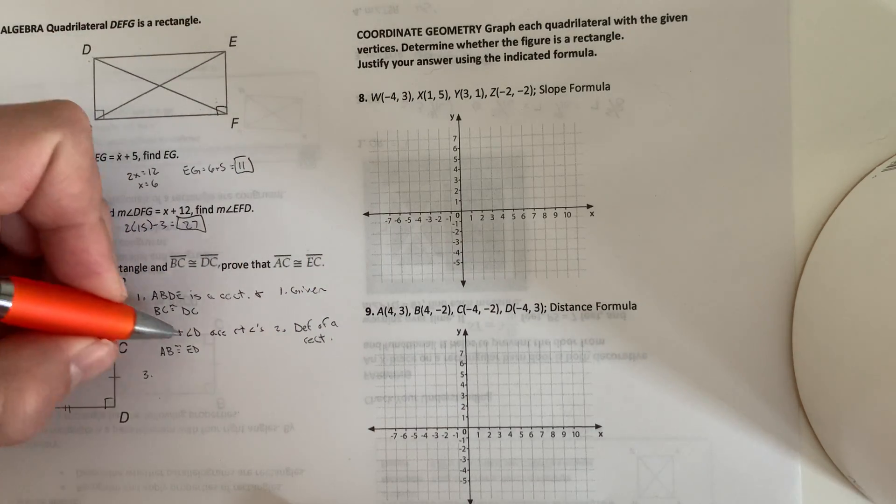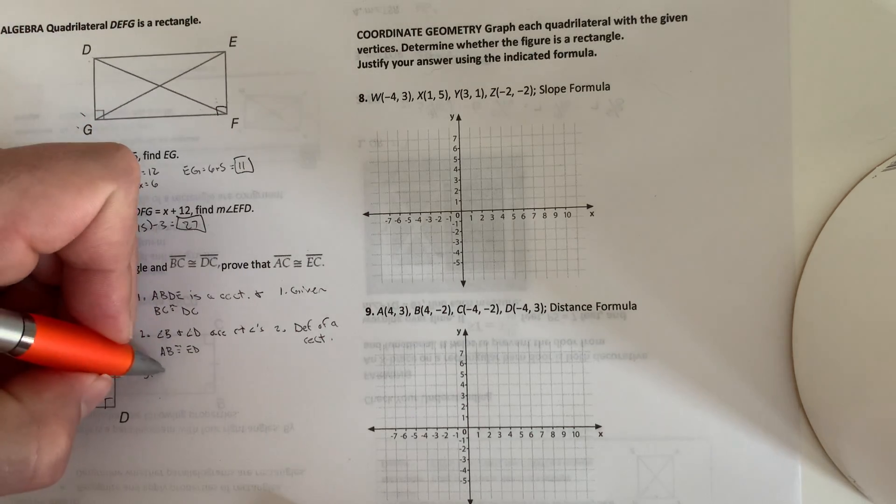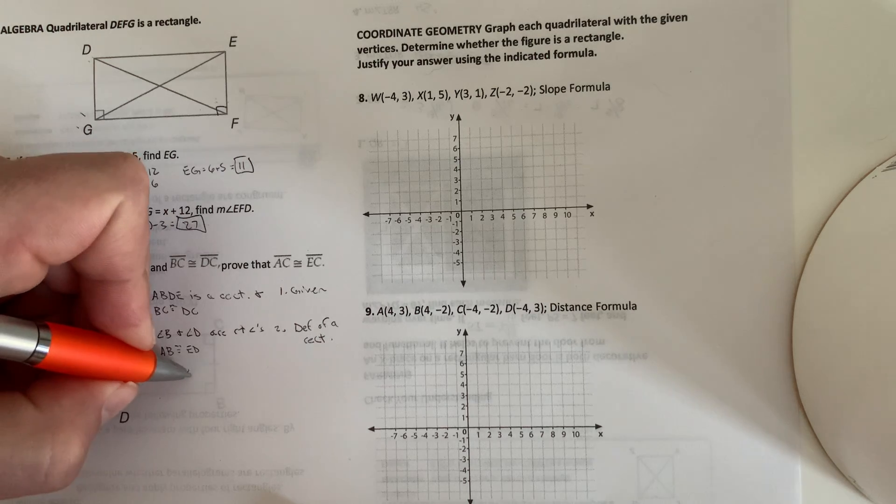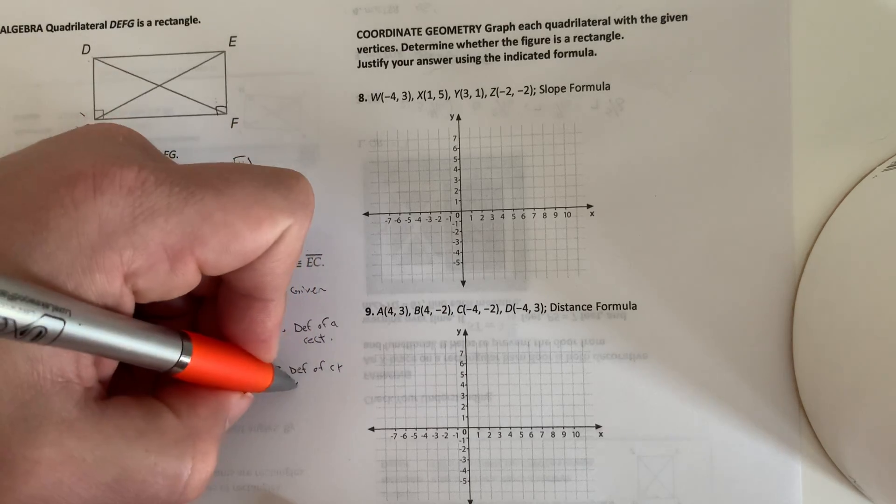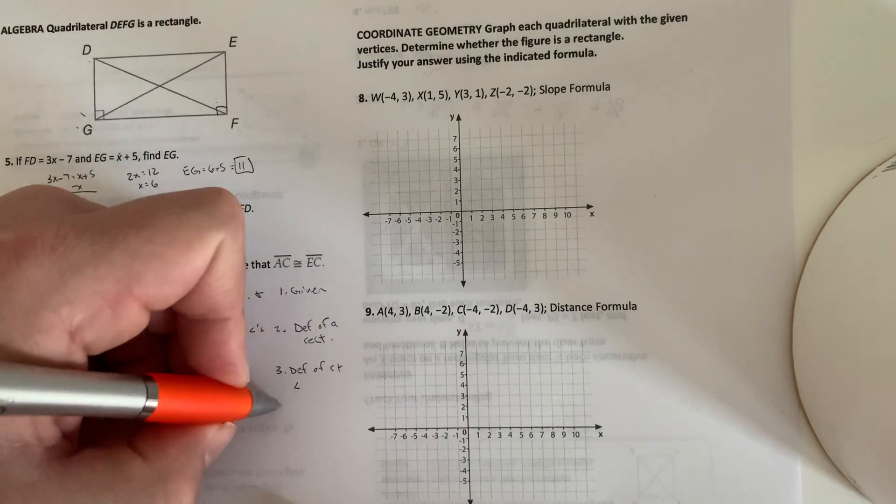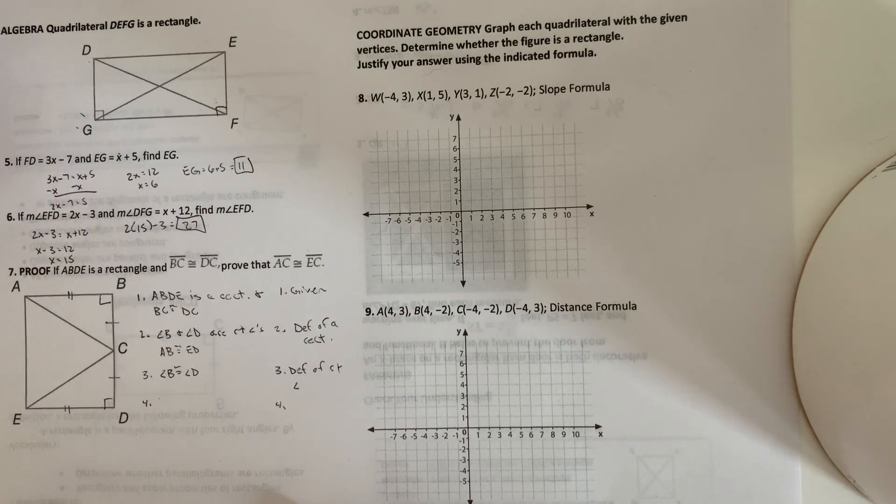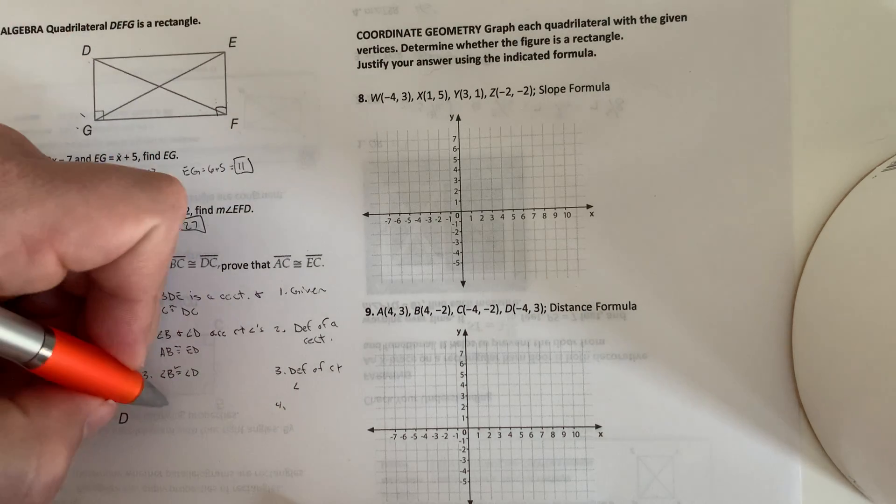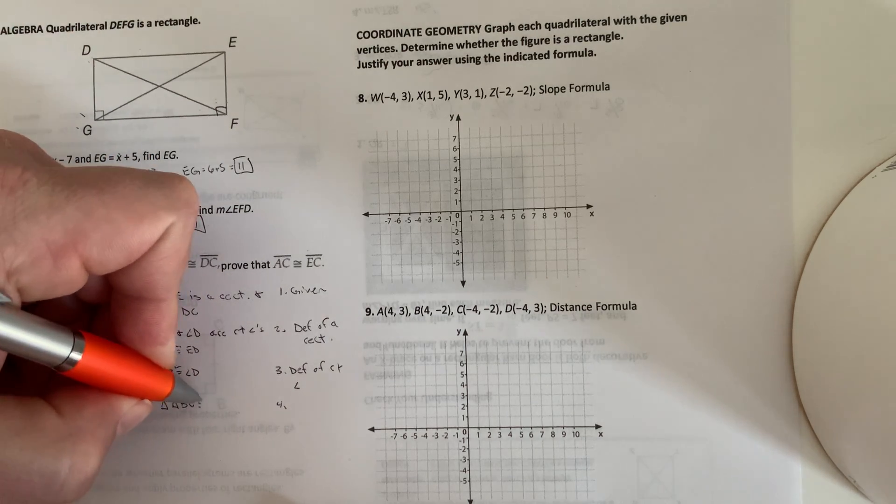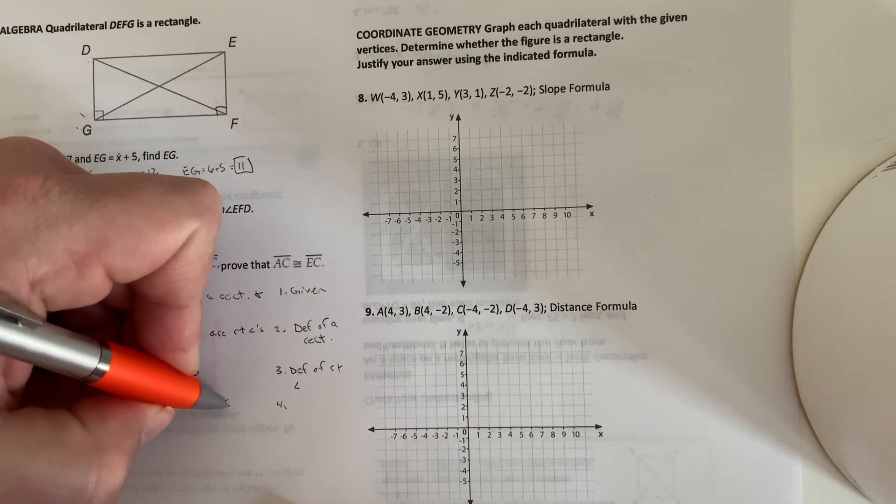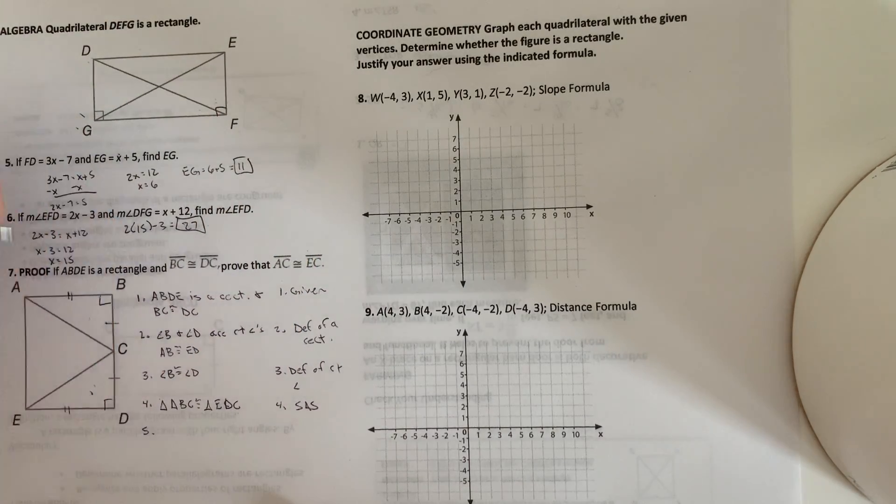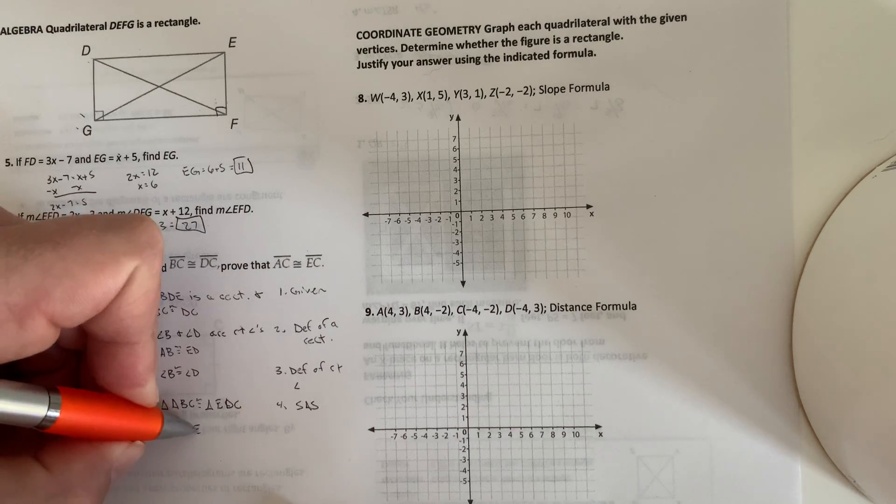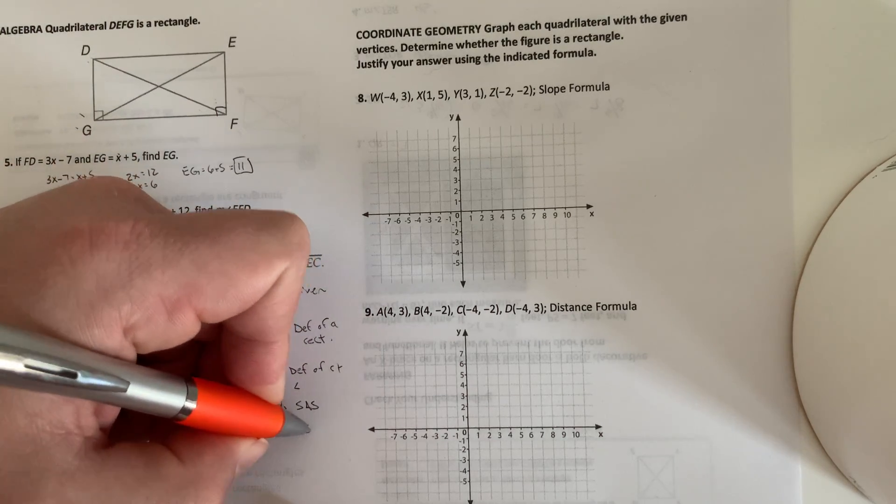So step 3, if angle B and angle D are right angles, then they would be congruent. So angle B is congruent to angle D. That's the definition of a right angle. So now I have a side, angle, and a side marked congruent for both of these triangles. So I can say that those triangles are congruent. So triangle ABC is congruent to triangle EDC. By side, angle, and side. So then therefore AC is congruent to EC. By CPCTC. Alright.